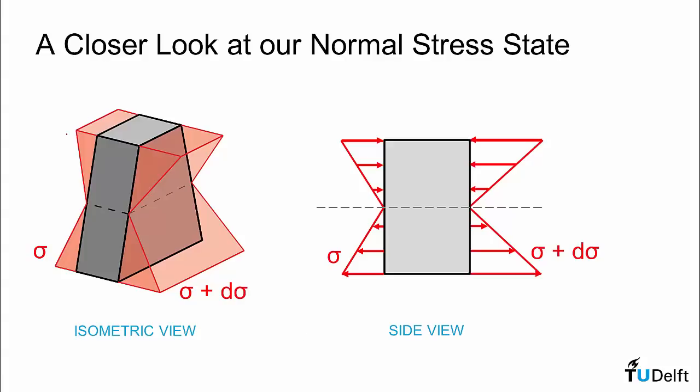If we look at our stress distributions, it actually does look like this element is not in equilibrium, because the magnitudes of the stresses on the left are smaller than the magnitudes of the stresses on the right. However, you need to recall that the normal stress distribution due to bending is such that the stresses, the resultant force due to the stresses on one face, is actually zero.